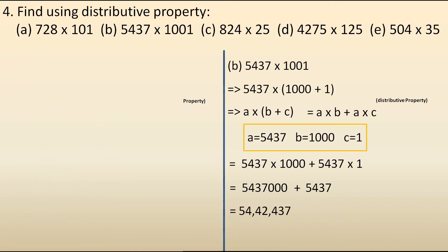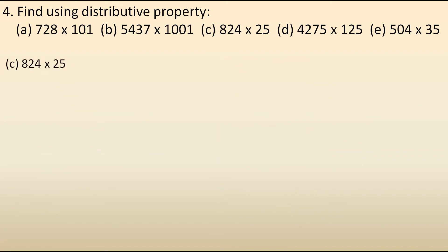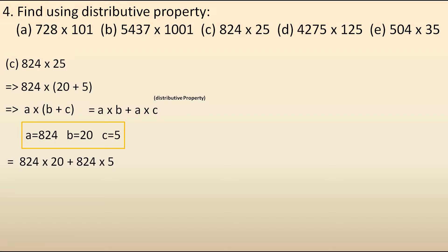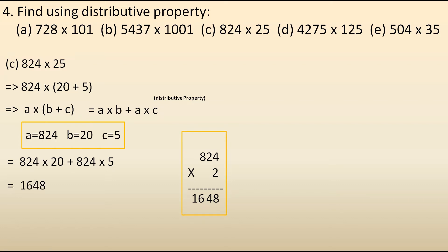Now let's move to the third: 824 into 25. Here we will split 25 as 20 plus 5. Distributive property: A is 824, B is 20, C is 5. It becomes 824 into 20 plus 824 into 5. For 824 into 20, we first multiply 824 into 2: 2 fours are 8, 2 twos are 4, 2 eights are 16, giving 1,648. With the remaining zero, the answer becomes 16,480.